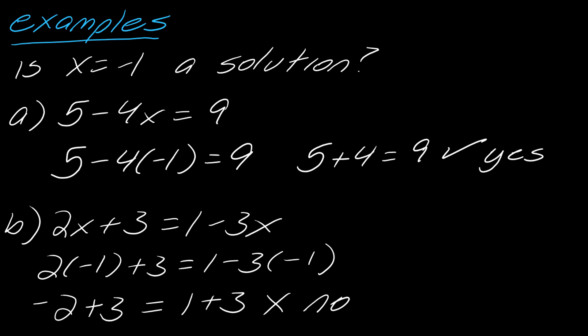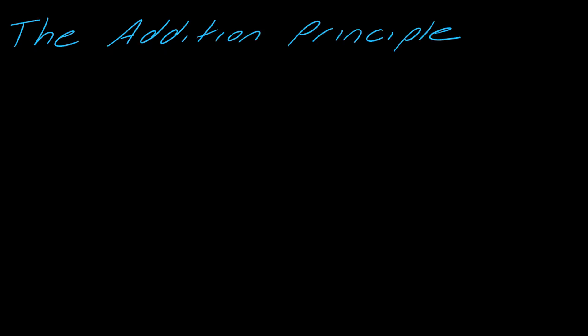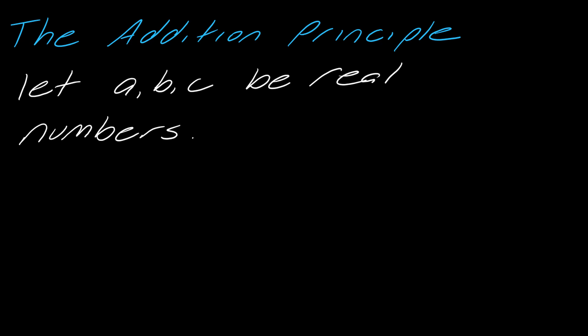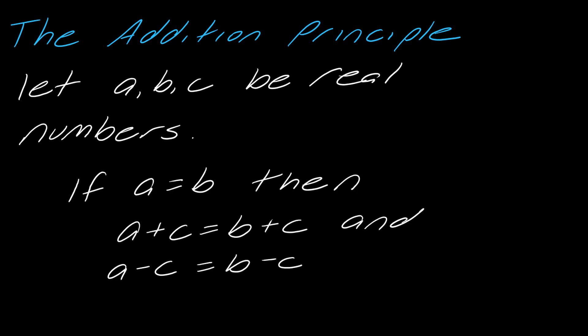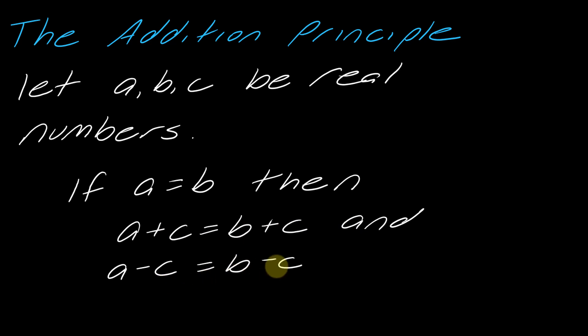There are two key things that help us solve equations. The first is the addition principle. If a equals b, then a plus c equals b plus c, and a minus c equals b minus c. Basically, if you add something to one side, to keep the equality you add it to the other. Whatever you do to one side, you have to do to the other.